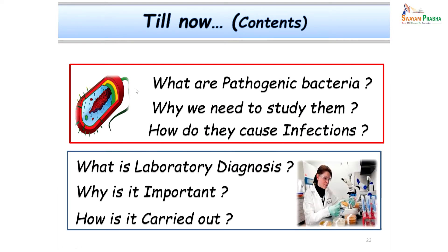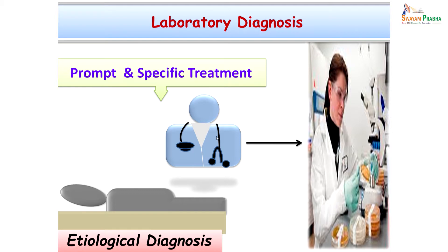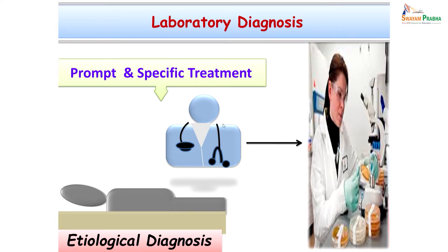So till now we have answered the first three questions related to bacteria. The next important question is how we hit the diagnosis of infectious diseases in the laboratory. Laboratory diagnosis means whenever we come across a patient, the physician makes a clinical diagnosis based on clinical signs and symptoms. However, making only a clinical diagnosis is not sufficient because etiology is not established by then. Establishing the etiological diagnosis is possible by doing laboratory diagnosis — growing organisms in the laboratory and testing them against antibiotic sensitivity forms the mainstay of patient-specific treatment, helping the patient recover faster.